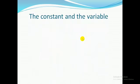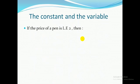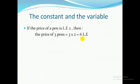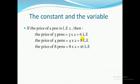Hello Primary 5, let's continue Unit 2, Lesson 2. The lesson is about constants and variables. If the price of one pin is two LE, then the price of three pins equals three times two equals six. The price of four pins equals four times two equals eight LE. The price of eight pins equals eight times two equals 16 LE. Here I make a multiplication between the price of one pin and the total number of pins.